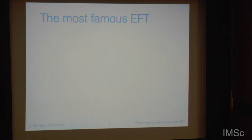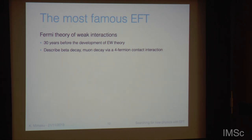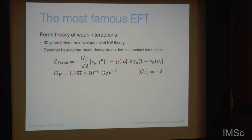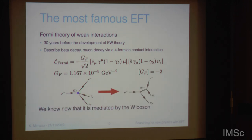The most famous EFT is the Fermi theory of weak interactions. It came about about 30 years before the development of the electroweak theory itself. It describes beta decay and muon decay via a four-fermion contact interaction, where the Fermi constant GF is defined to be the coupling of this four-fermion interaction, which has a mass dimension of minus two. Muon decay would be mediated in such a way, and of course we now know there's a W boson being exchanged.